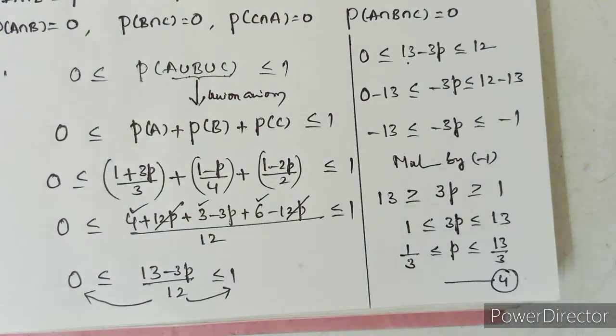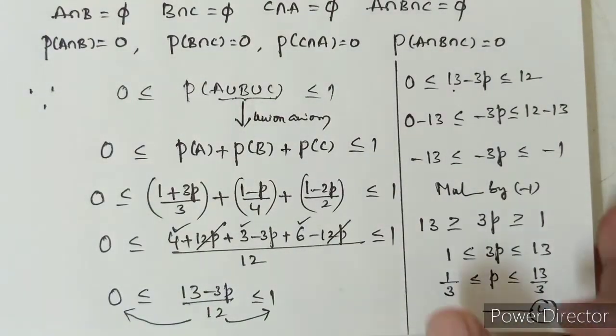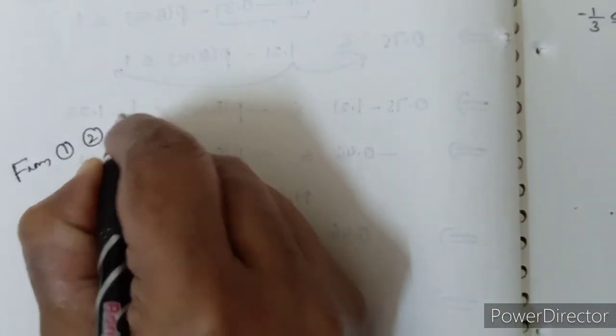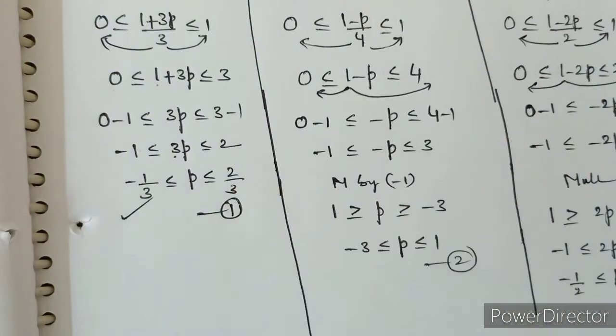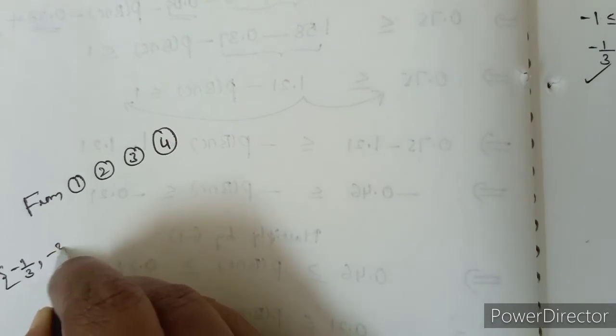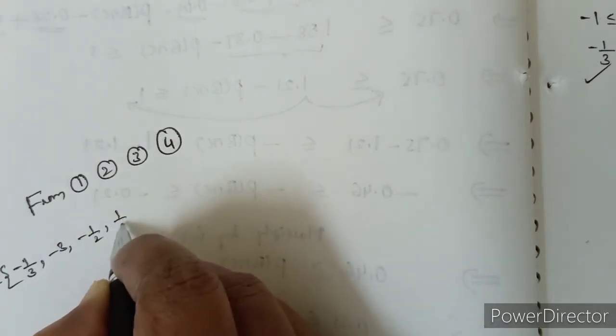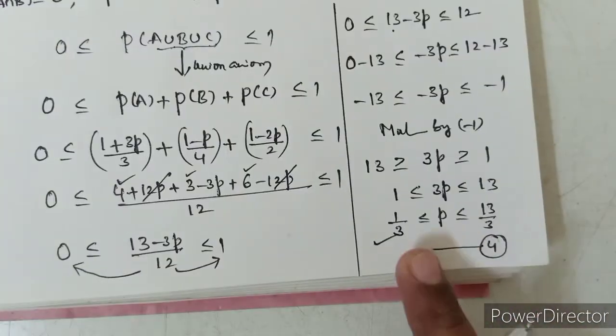Now we combine all four inequalities. From equation 1: -1/3 ≤ p ≤ 2/3. From equation 2: -3 ≤ p ≤ 1. From equation 3: -1/2 ≤ p ≤ 1/2. From equation 4: 1/3 ≤ p ≤ 13/3. We must take the maximum of all left-side values: max(-1/3, -3, -1/2, 1/3) ≤ p.